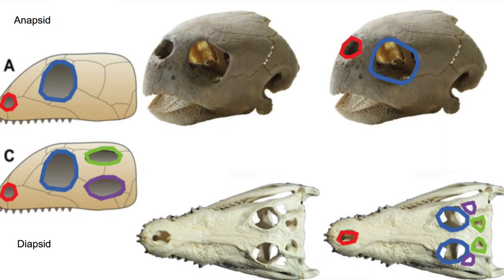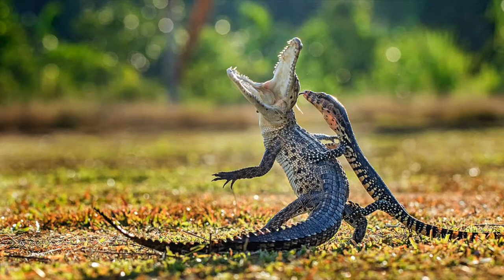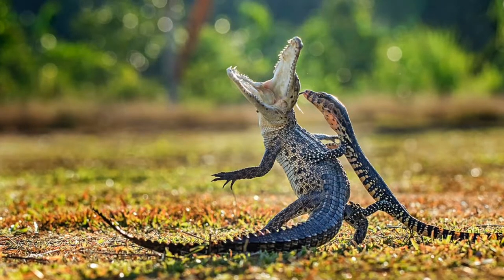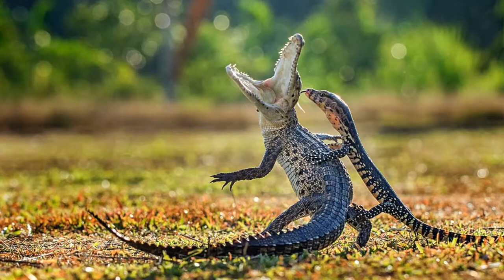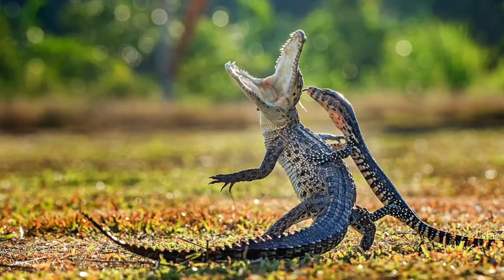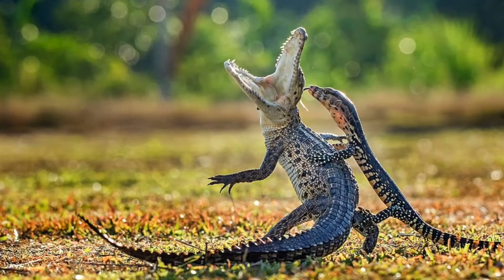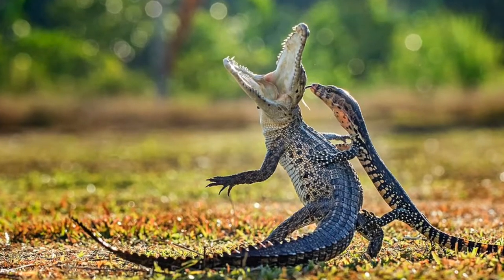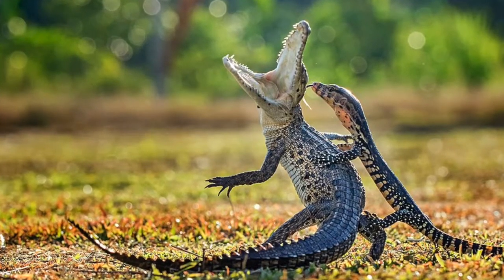Paleontologists used to believe that turtles came from anapsida, or skulls without holes. But geneticists believe that your ancestor is really a diapsid, or a creature with two holes in its skull. So which one are we? Through more research, we now know that turtles were diapsid. Because we know they are diapsid, paleontologists like Dr. Ayala were able to hypothesize that turtles are closely related to reptiles that gave rise to lizards and snakes. Geneticists like Dr. Robin believe that turtles are diapsid as well, but disagree on the sister taxa.